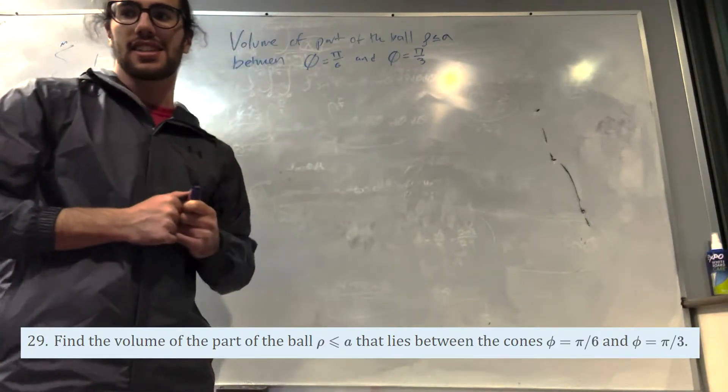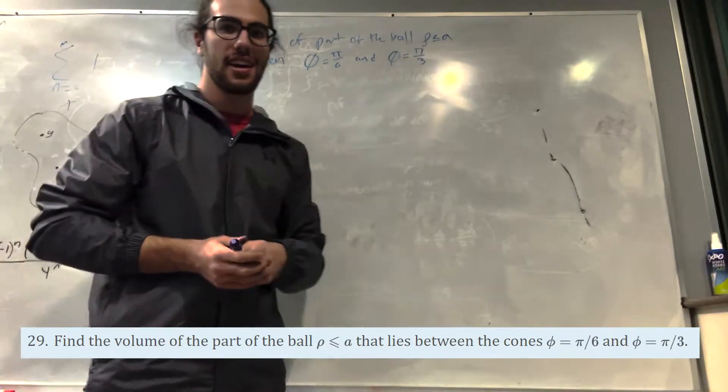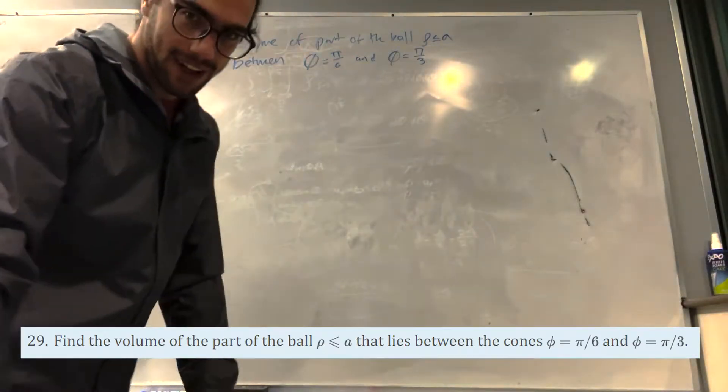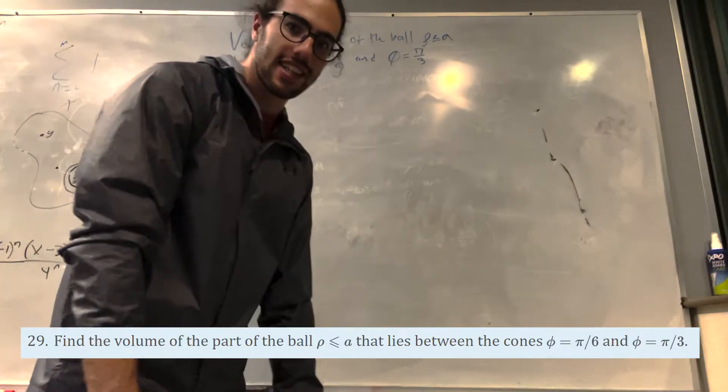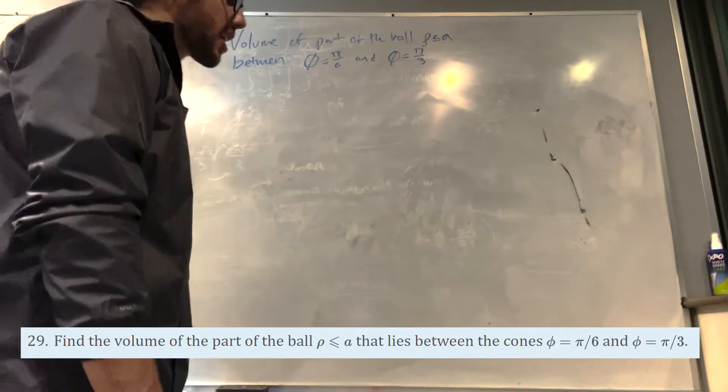But the thing is that rho equals a, so a is just a constant. I mean, you can put in any constant and you're gonna get the same. So we're actually kind of like finding a formula. That's kind of cool.